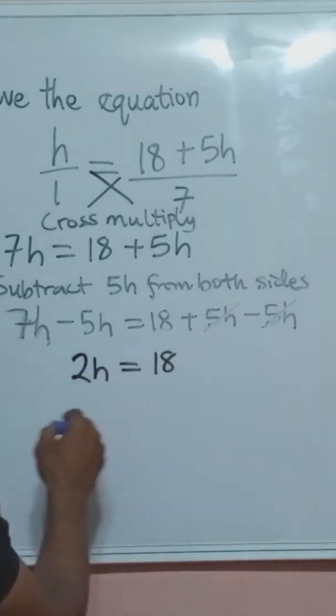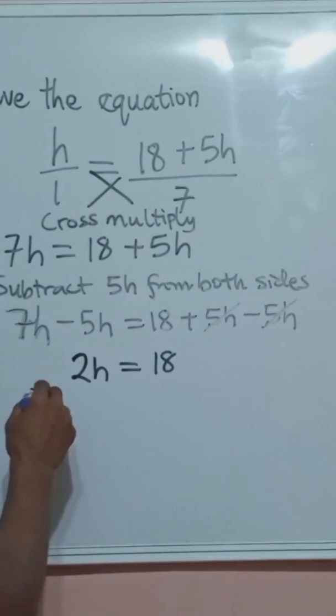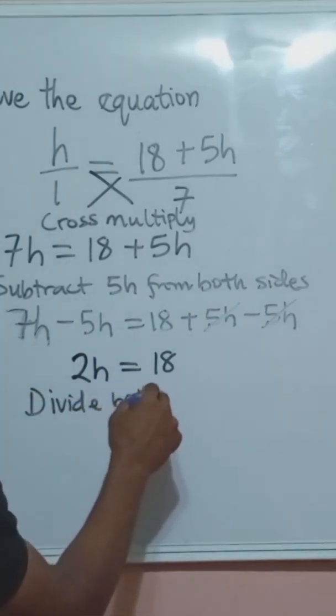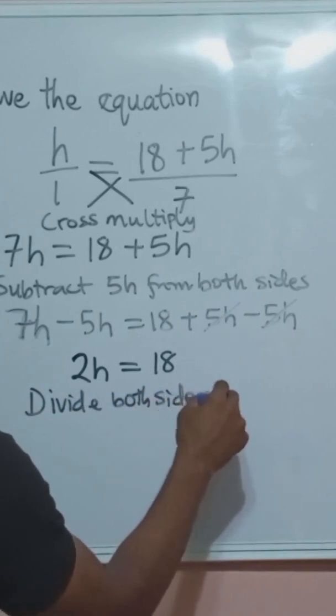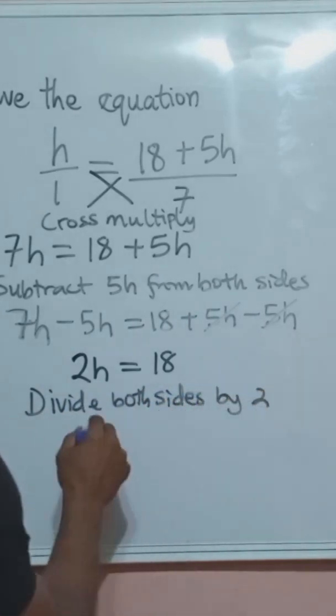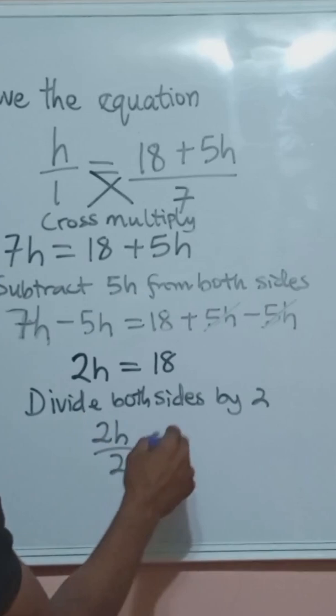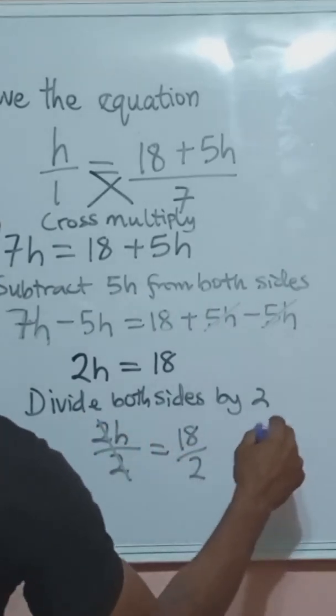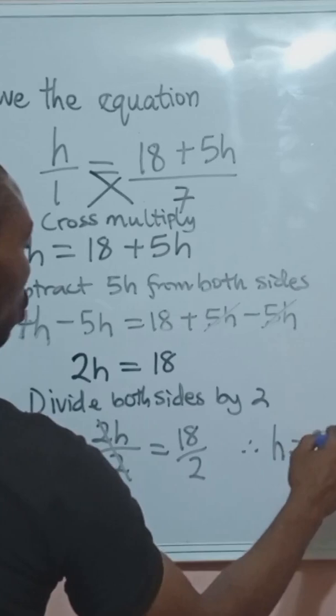7h minus 5h we know it to be 2, so 2h equals to 18. Divide both sides by 2. This becomes 2h over 2 equals to 18 over 2, so our h equals to 9.